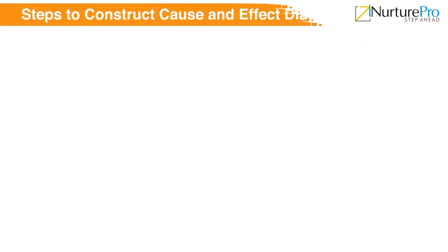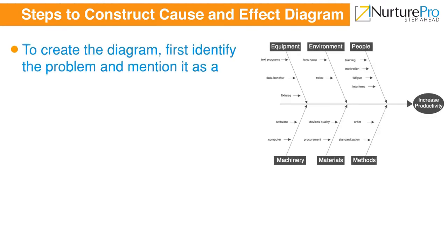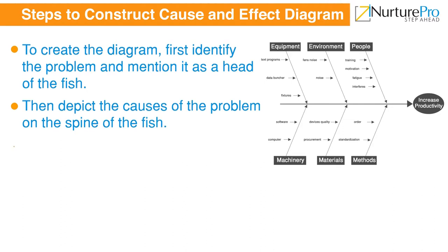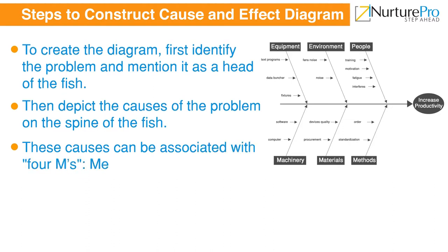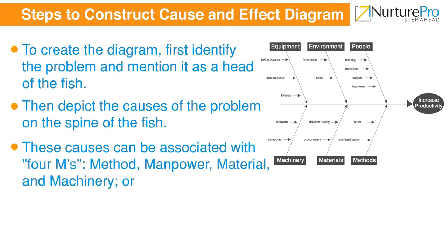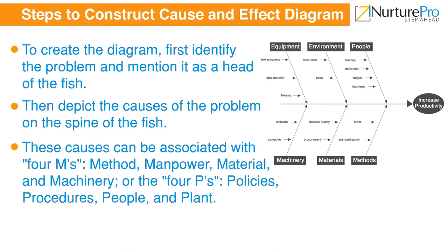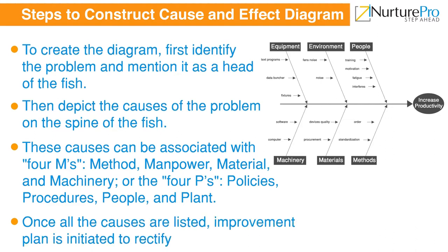Ishikawa diagrams find the factors causing an undesired effect and the factors which can lead to desired results. To create the diagram, first identify the problem and mention it as the head of the fish, then depict the causes on the spine. These causes can be associated with the four M's — method, manpower, material, and machinery — or the four P's: policies, procedures, people, and plant. Once all causes are listed, an improvement plan is initiated to rectify the identified problem.